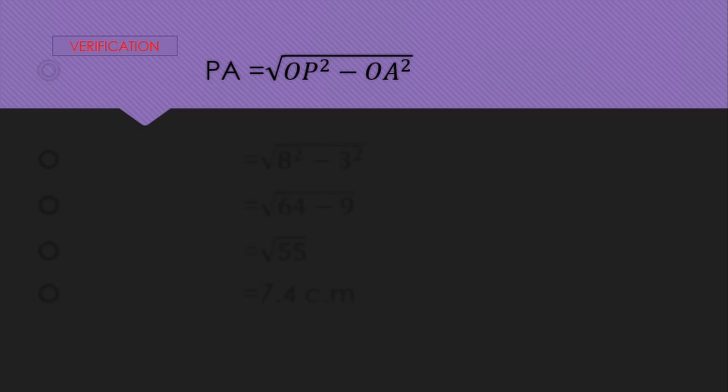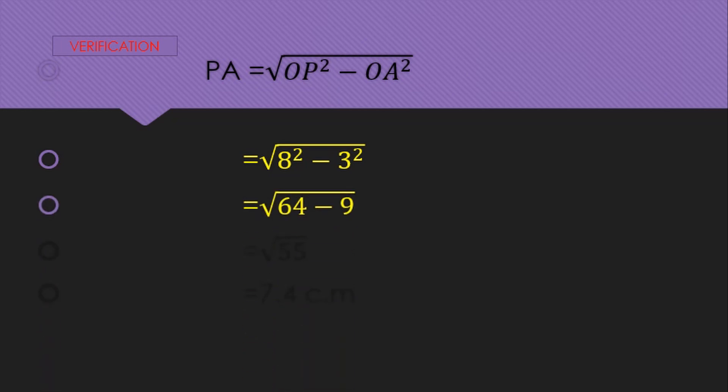PA equals √(OP² − OA²). OP equals 8 and OA equals 3. So PA equals √(8² − 3²) equals √(64 − 9) equals √55, which gives approximately 7.4 cm.